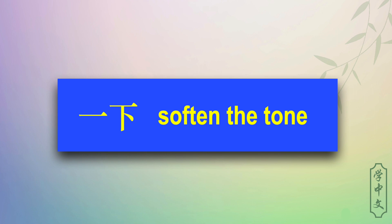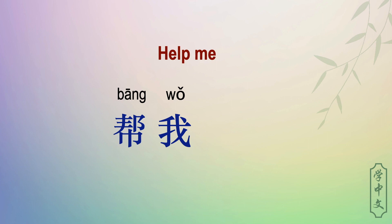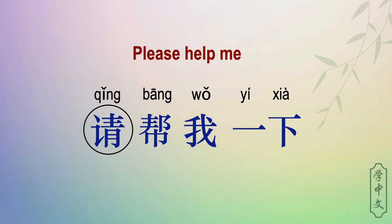一下 has a very important function — it is used to soften the tone. If you ask for something, if you just say 帮我, it may sound like an order. But if you say 帮我一下, it sounds more friendly. Even if you use 请, people still like to say 请帮我一下.